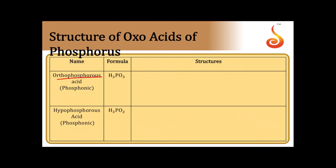Let us now draw the structures of all oxo acids of phosphorus. First, orthophosphorous acid (H3PO3): we draw one P=O bond, then one P-OH group, then one more P-OH group, and the remaining hydrogen is directly bonded to phosphorus. Because of the two P-OH groups, the basicity is two, and it forms two series of salts.